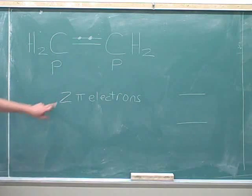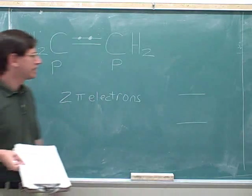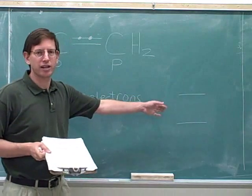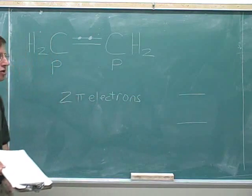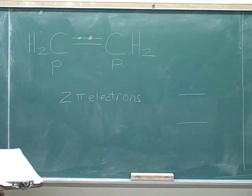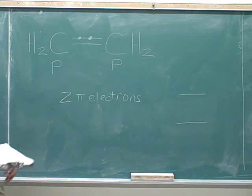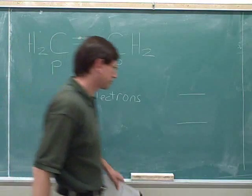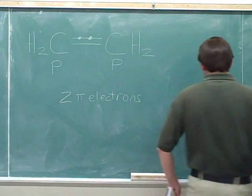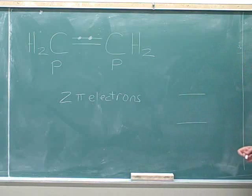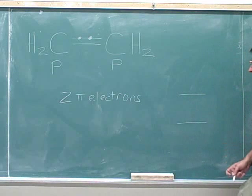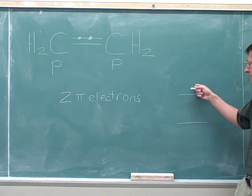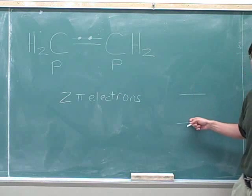We need to place those two pi electrons in the pi molecular orbitals. So where should we put the pi electrons in the molecular orbitals? Let's place the first electron. Should we place it in the high energy level or the low?